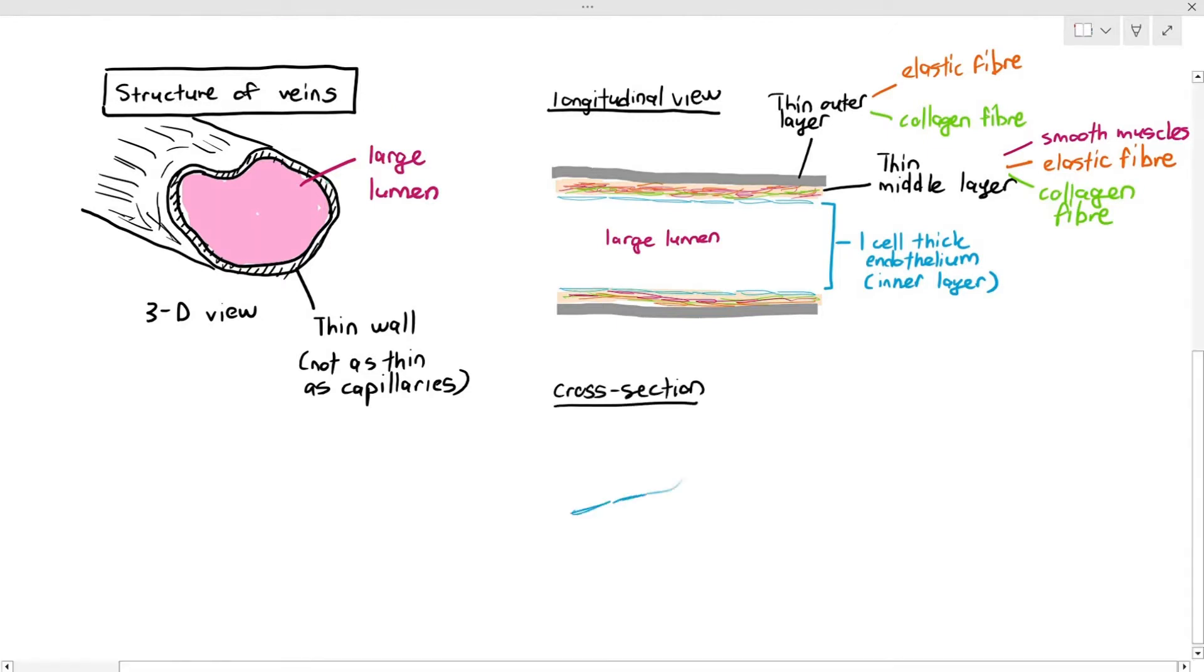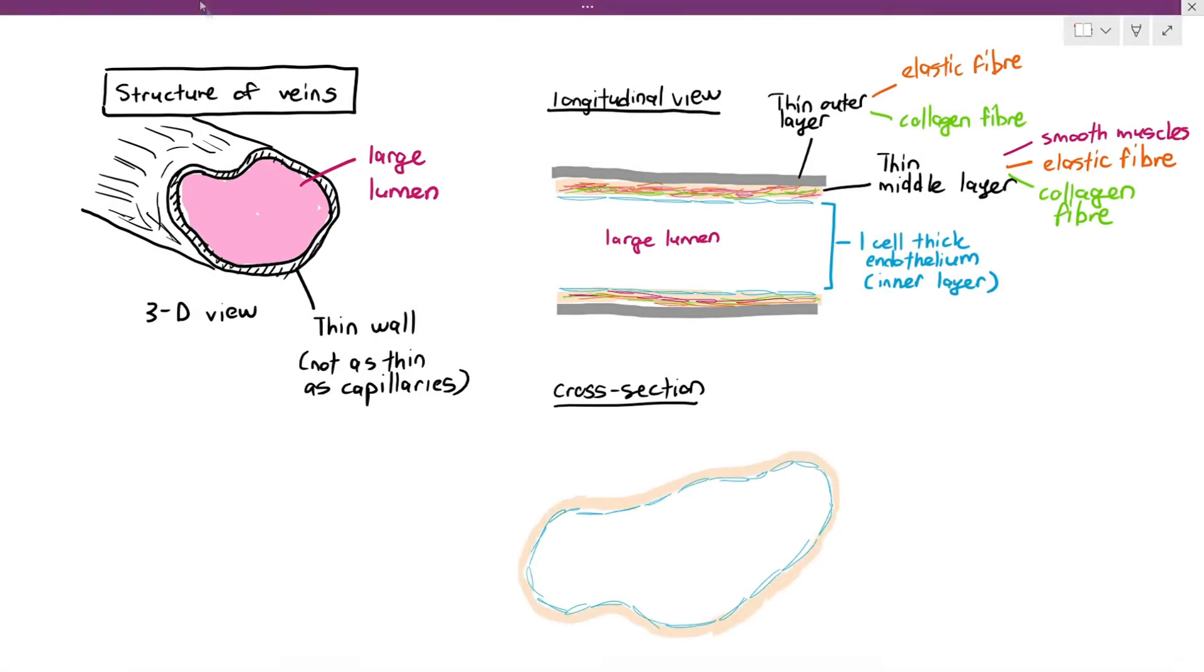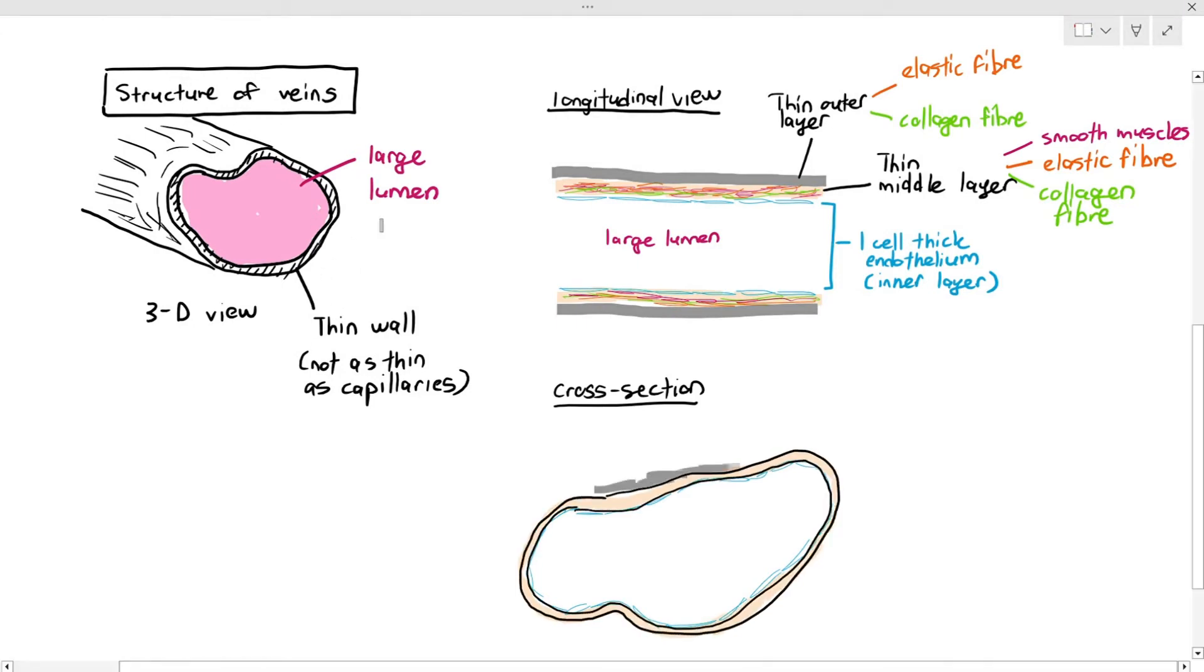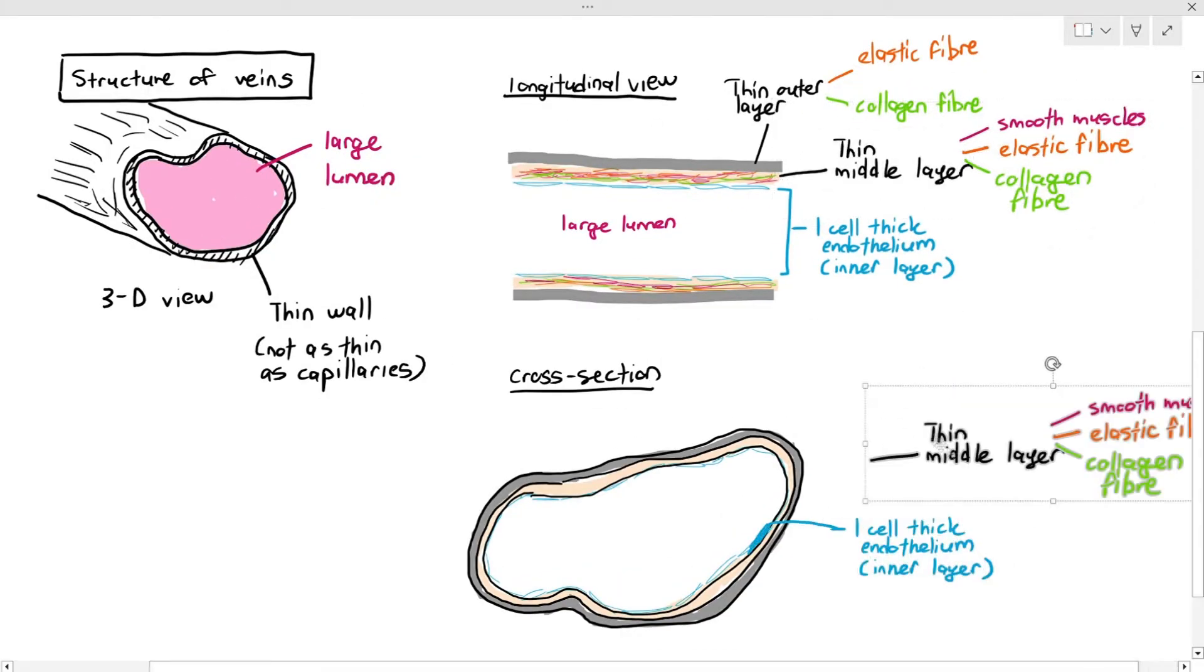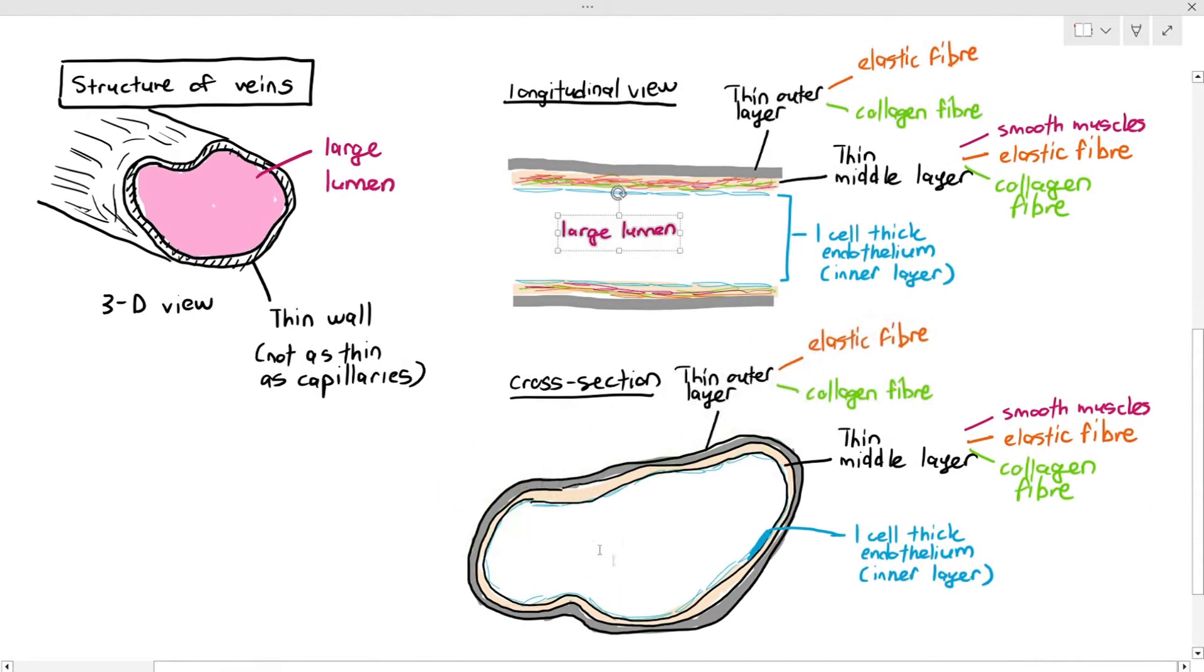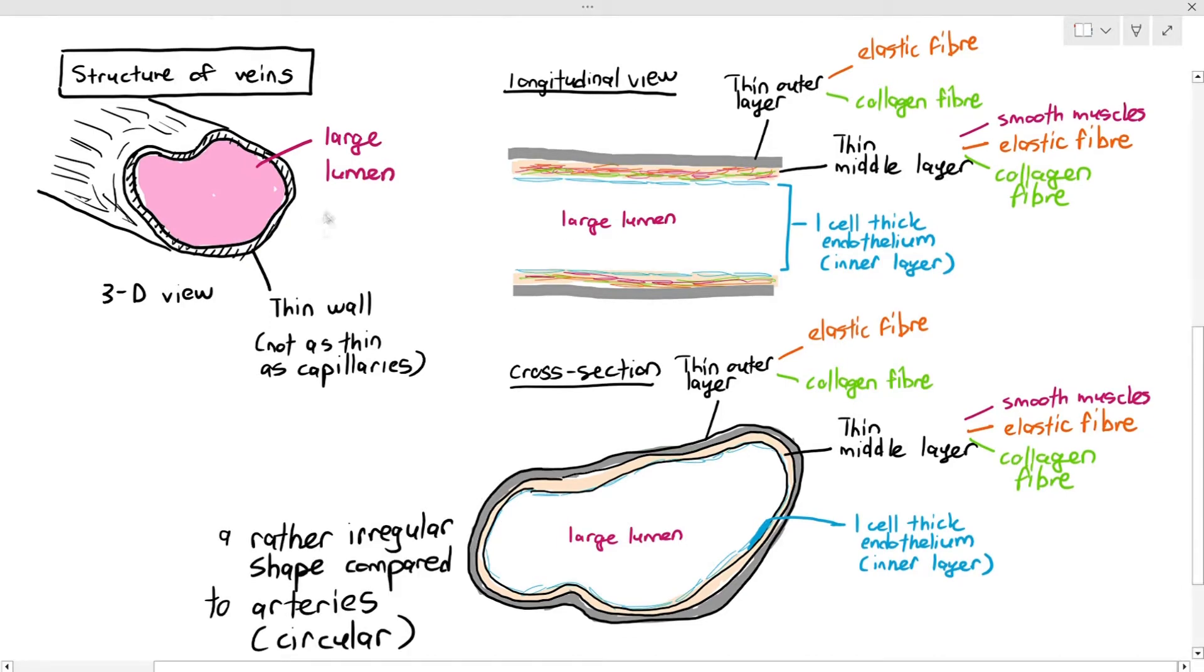And, of course, the cross-section. When I'm drawing the cross-section, notice that the shape, I'm just drawing on the endothelium, and the middle layer, and also the outer layer. I'm going to label it. The cross-section of the vein shows that it has a rather irregular shape compared to the arteries. Because the arteries have a rather circular cross-section, but veins have a more irregular shaped cross-section. That is how you would recognize a vein from an artery. A vein usually is quite irregular in its shape when it comes to its cross-section, whereas arteries are circular. Simple as that.